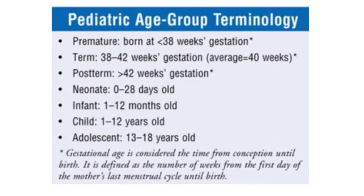Gestational age is considered the time from conception until birth. It is defined as the number of weeks from the first day of the mother's last menstrual cycle until birth. So delivery of a baby below 38 weeks of gestation is called premature.